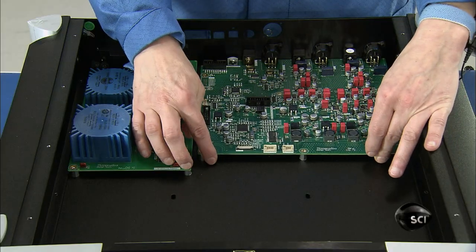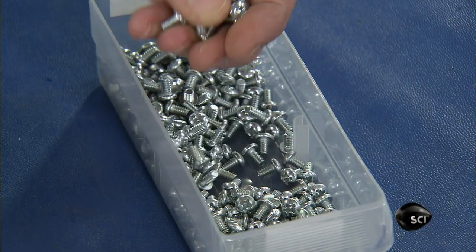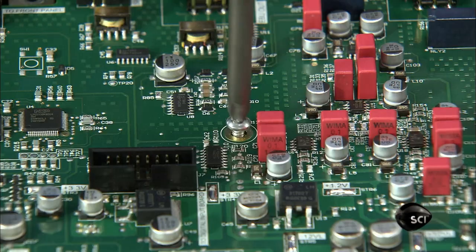If the main circuit board passes inspection, they install it in the back of the converter, next to the power supply board.